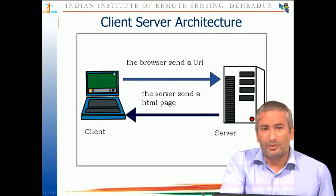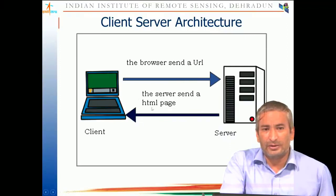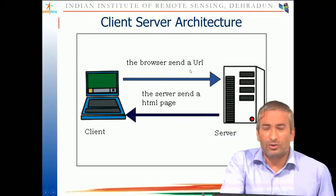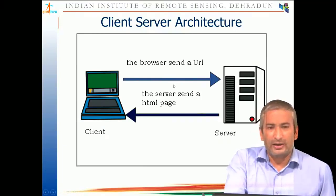A user makes a request for a web map. That request goes to the server, which processes it and gives a response as an HTML page. Your request goes as a URL — every map has a URL. That server URL may have many kinds of maps, and there may be hyperlinks for those maps, which are provided to the client as HTML. This is the basic architecture of a client and server.